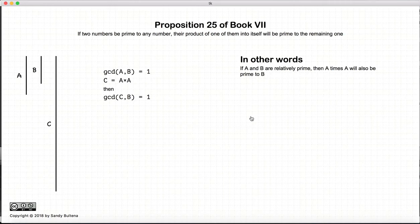Now in this proposition, it states that if we have two numbers, a and b, which are relatively prime, and essentially if we square one of the numbers, then the result, in this case c, will also be relatively prime to b.